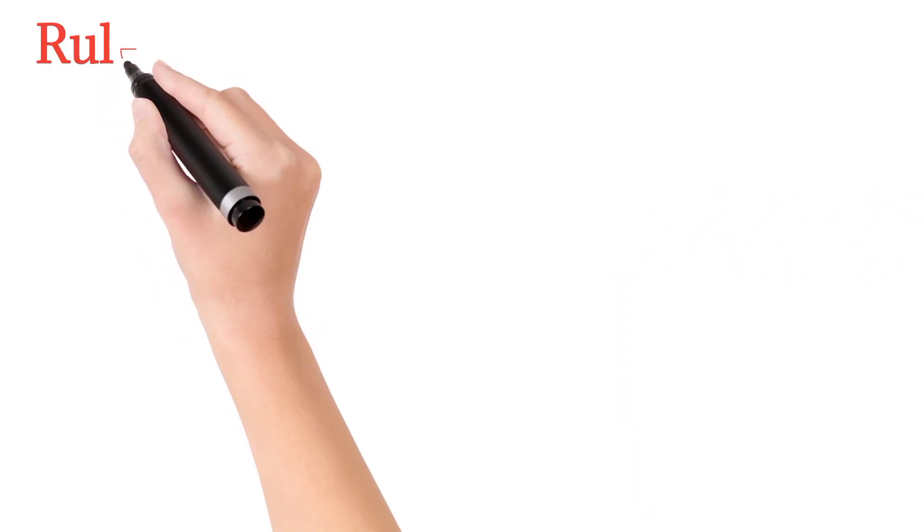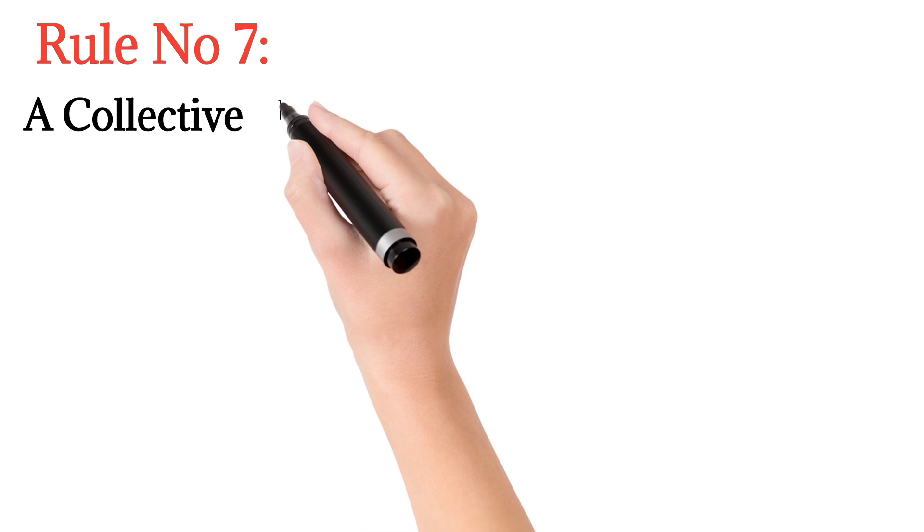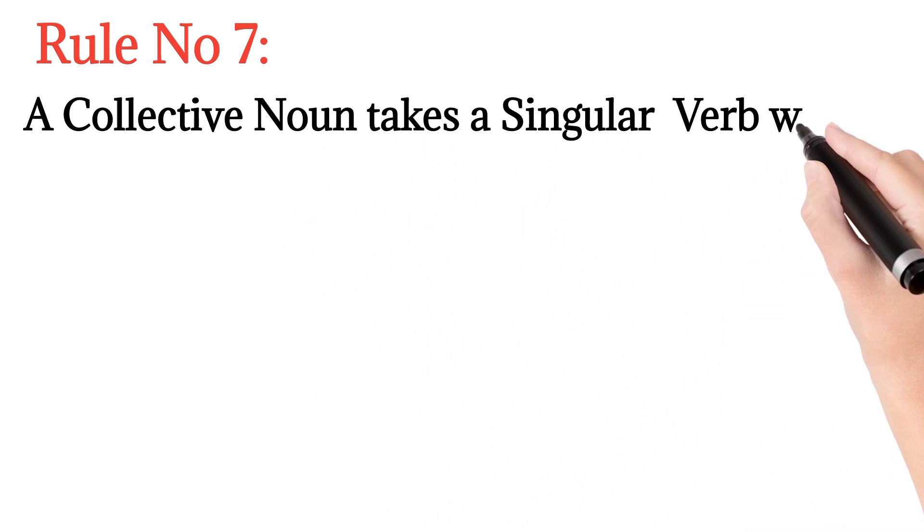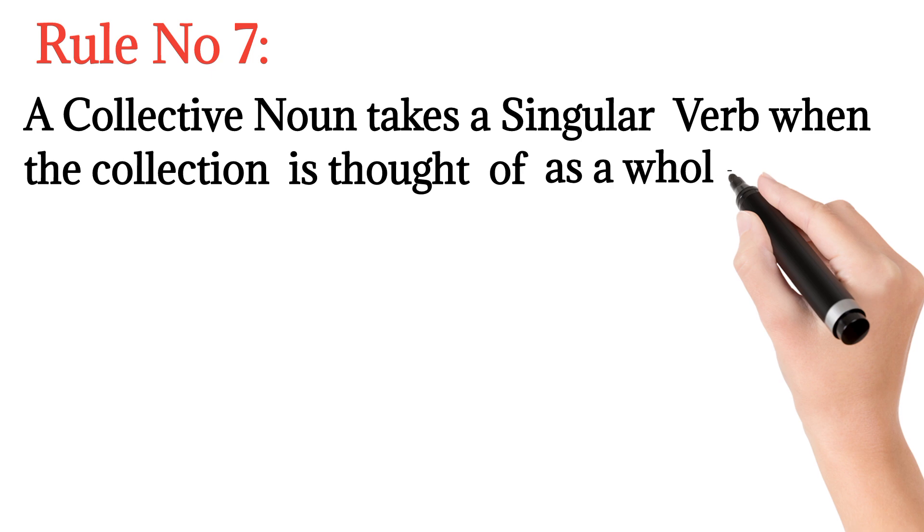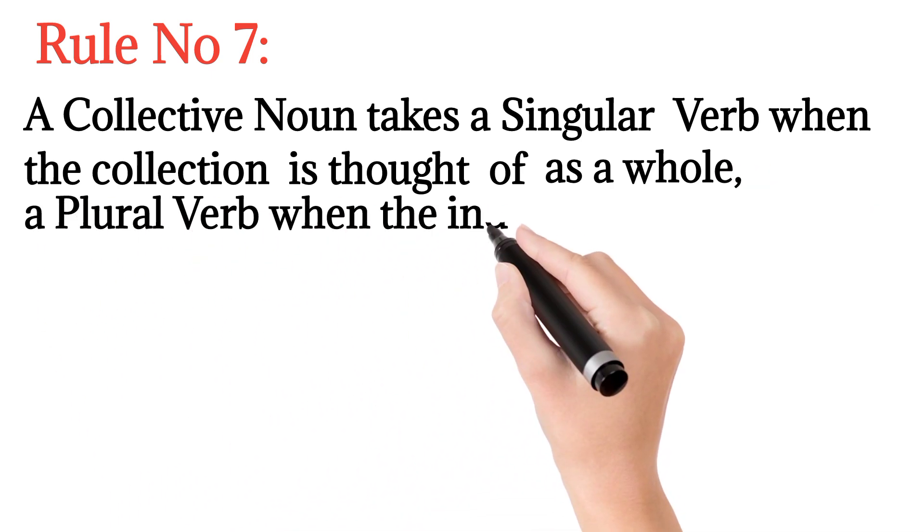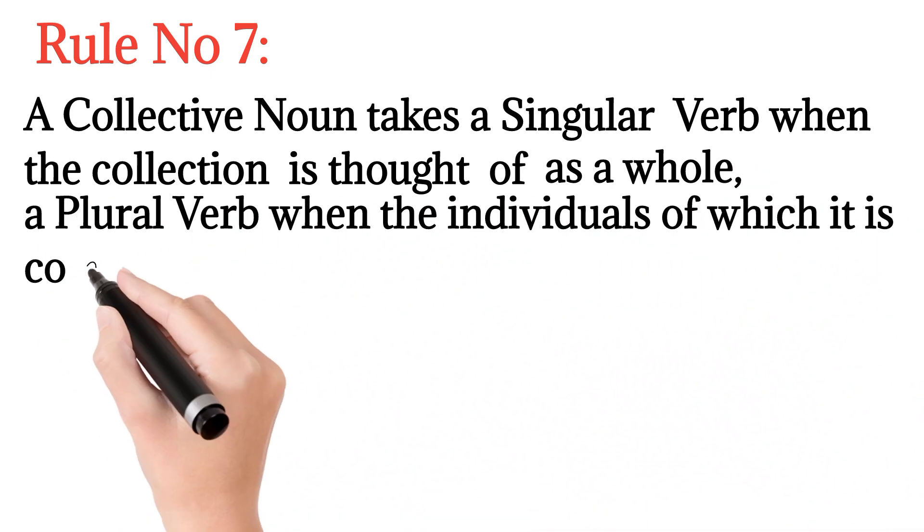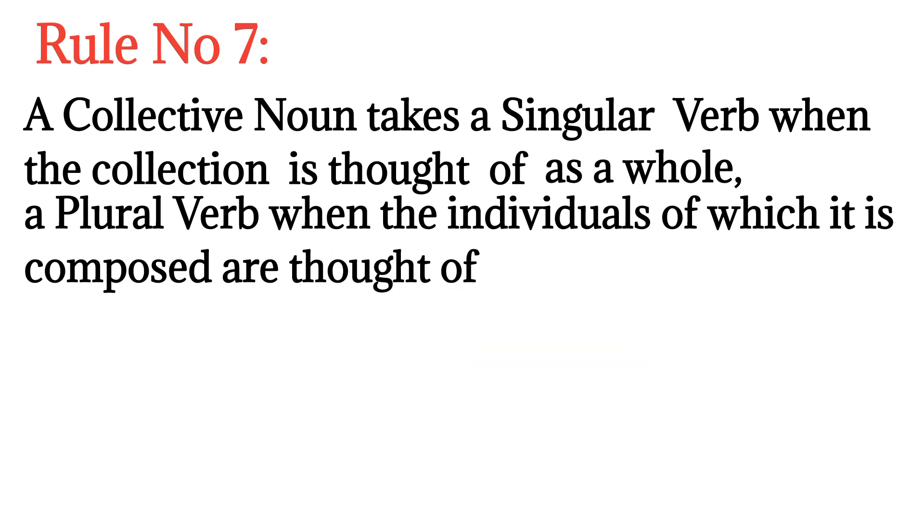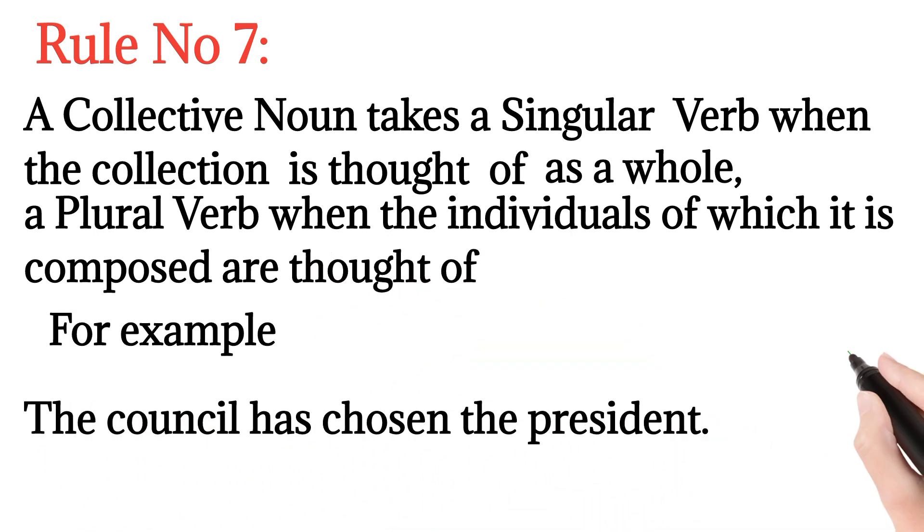Rule number seven: A collective noun takes a singular verb when the collection is thought of as a whole, and a plural verb when the individuals of which it is composed are thought of. For example, 'the council has chosen the president' - here the council is thought of as a whole, therefore the singular verb is used with it.